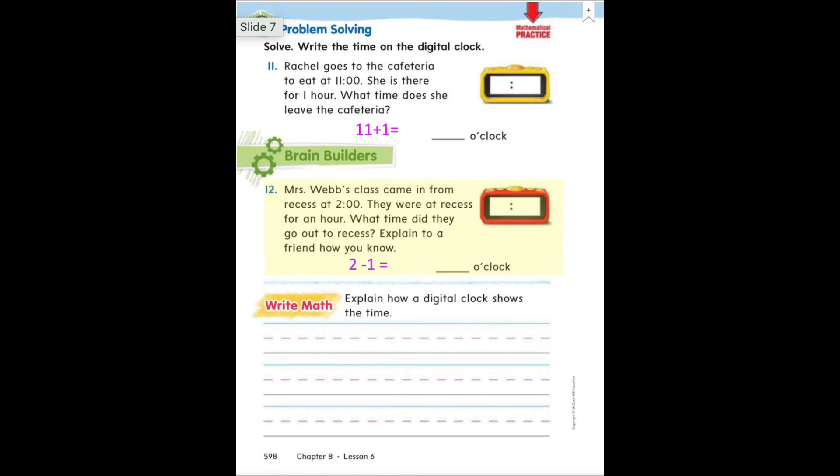Number 12 says Mrs. Webb's class came in from recess at two o'clock. They were at recess for an hour. What time did they go out to recess? And this time first graders, we need to subtract. We have the time they are coming in. We need to know what time it was an hour before they came in. So we are going to subtract two minus one equals what?